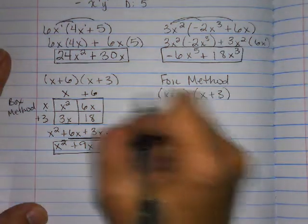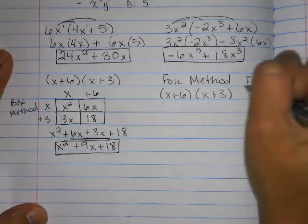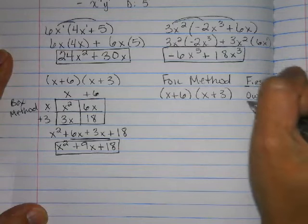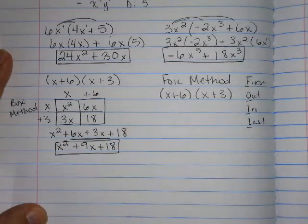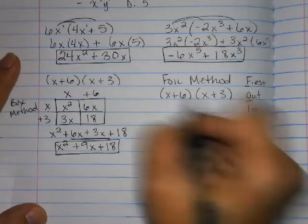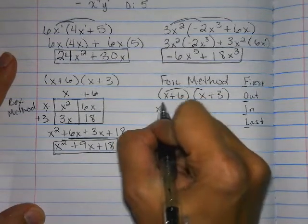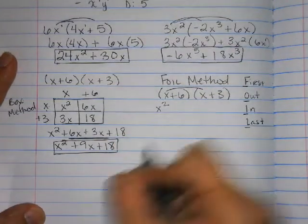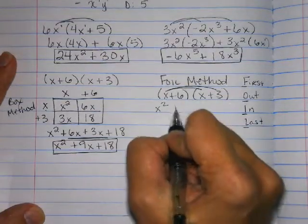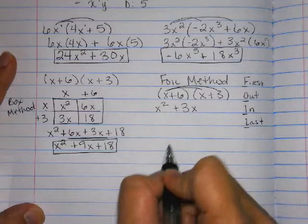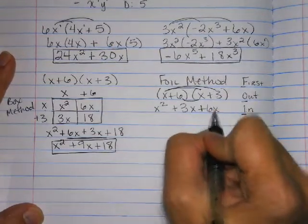FOIL stands for First, Outside, Inside, Last. First means the first term in both binomials — you're going to multiply those together, so x times x is x squared. Then you're going to take your two outside terms: x times 3 is 3x. And then you're going to multiply your inside terms: 6 times x is 6x.